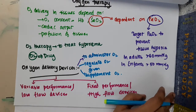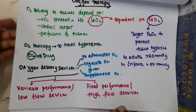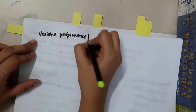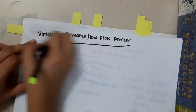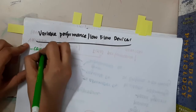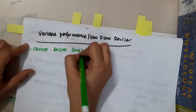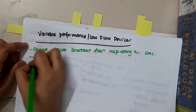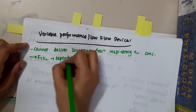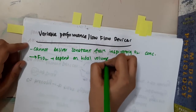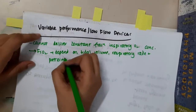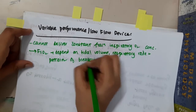Variable performance, or low flow, devices — as the name says — cannot deliver a constant fraction of inspiratory oxygen concentration. The FiO2 delivered mainly depends on tidal volume, respiratory rate, and the pattern of breathing of the patient.